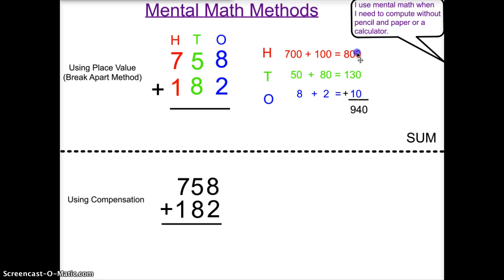Simply because they end in 0, 800, 130, and 10, I can easily just add my second digits, which tens place, moving from the right to left. 3 plus 1 is 4. And hundreds, 8 plus 1 is 900.